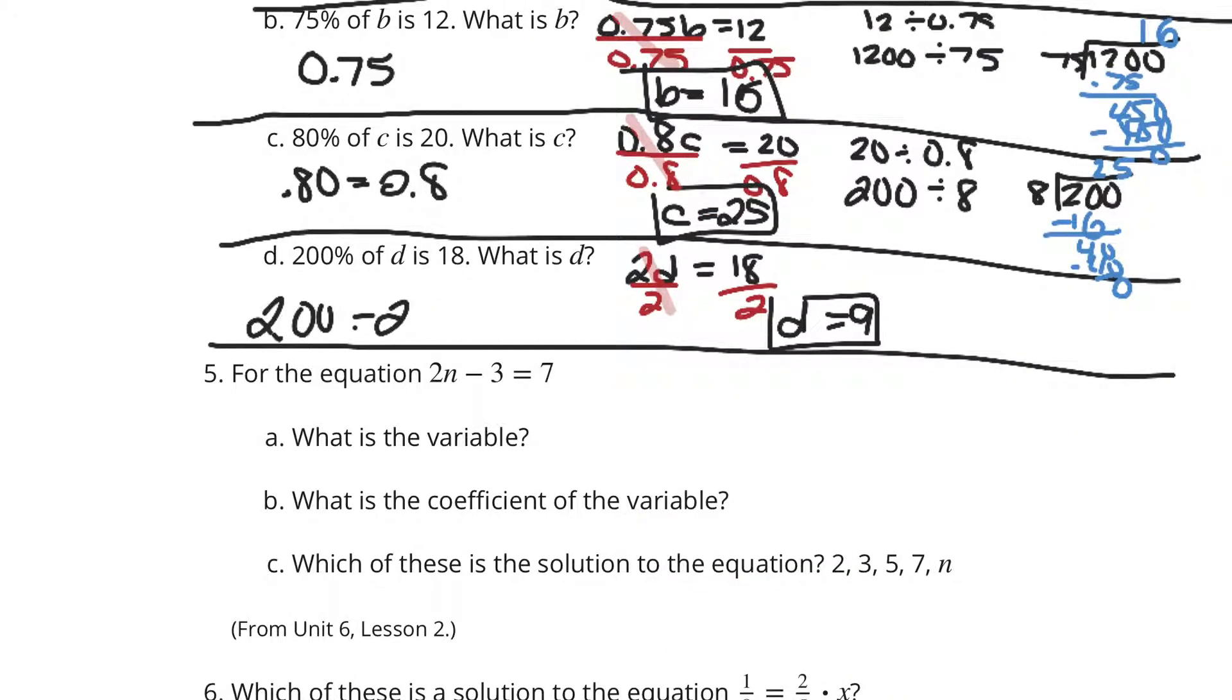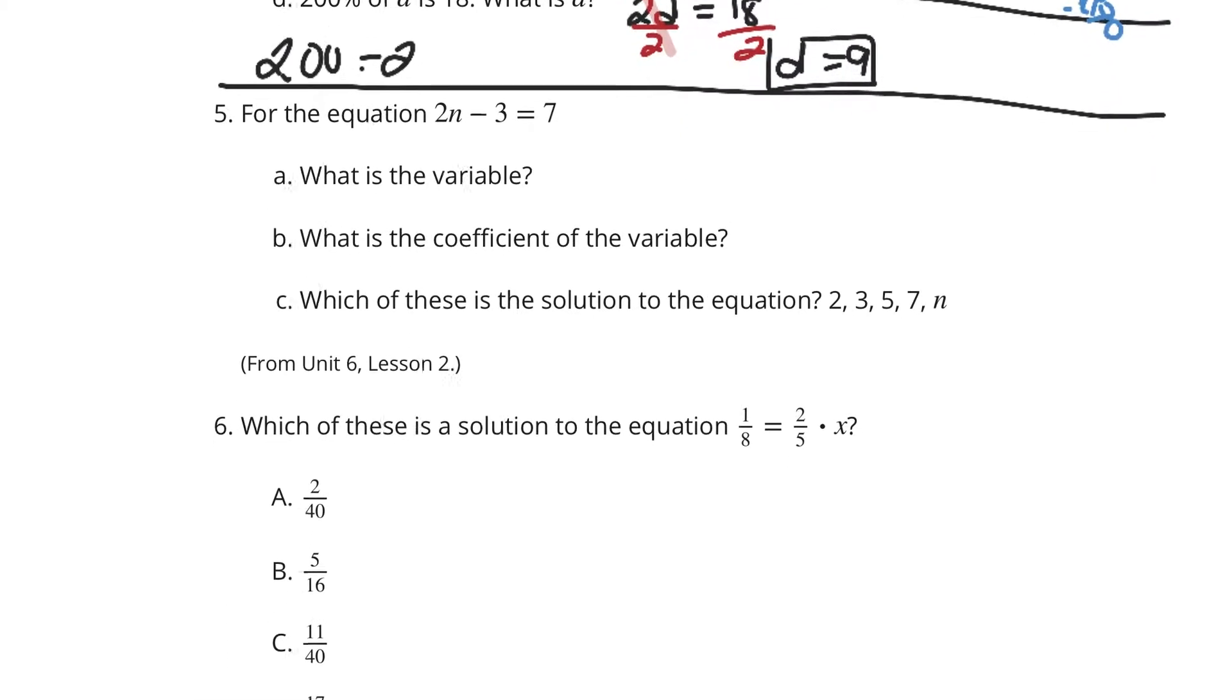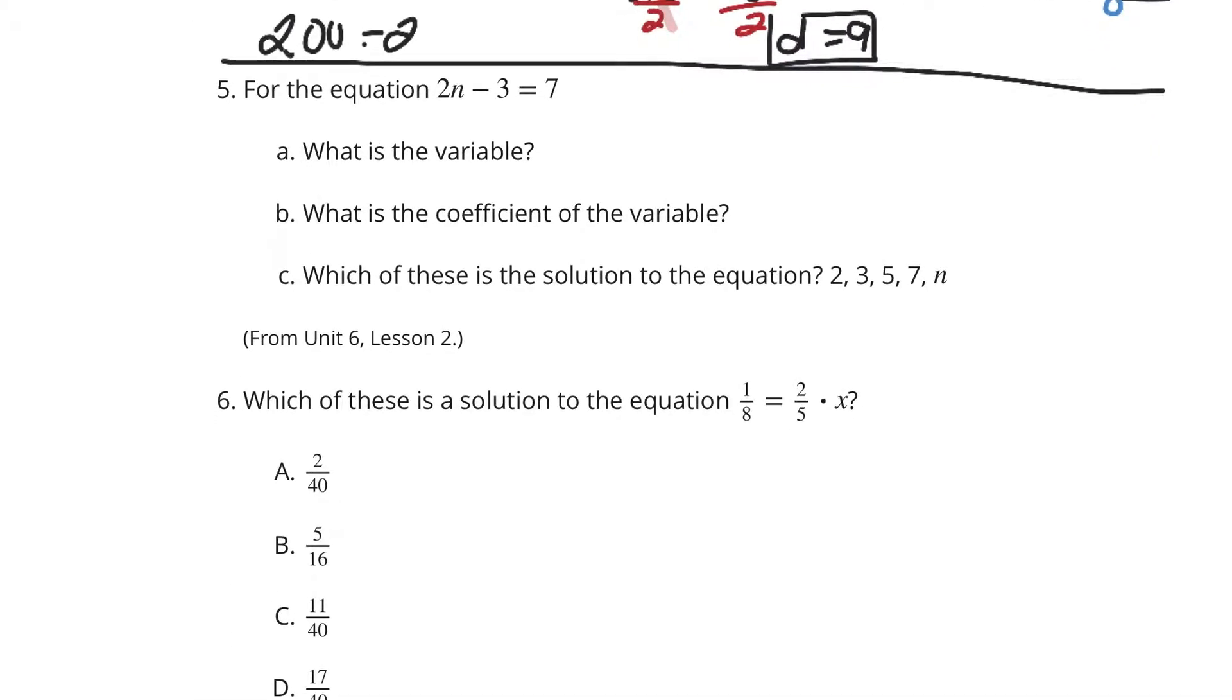Question 5. For the equation 2N minus 3 equals 7. What is the variable? What is the coefficient? Which of these is a solution? Well the variable is N. The coefficient is 2. And which of these is a solution? We can go ahead and check a bunch of these, even mentally.